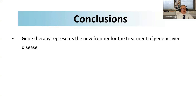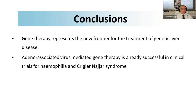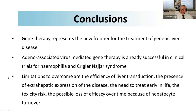In conclusion, gene therapy represents the new frontier for the treatment of genetic liver disease — a fantastic and very exciting field for clinicians caring for patients with genetic liver disorders. AAV-mediated gene therapy is successful in clinical trials for hemophilia, and these preliminary results show it is also possible to correct Crigler-Najjar disease. Limitations include the efficiency of liver transduction, extrahepatic expression of some diseases that cannot be addressed by a single-tissue vector, the need to treat early before fibrosis develops, toxicity risk, and possible loss of efficacy over time due to hepatocyte proliferation diluting the episomal DNA.